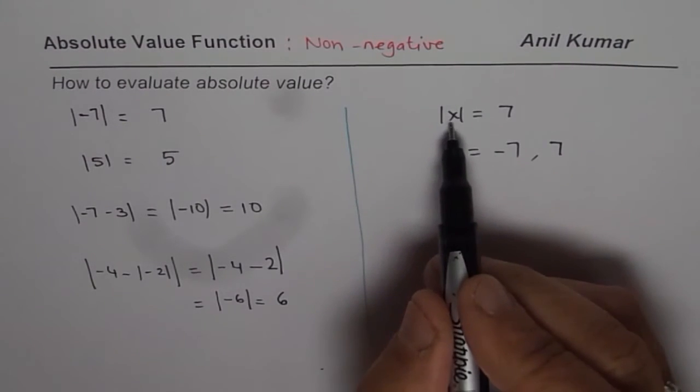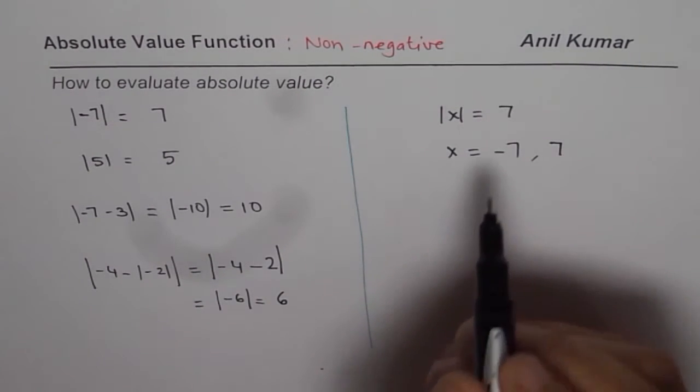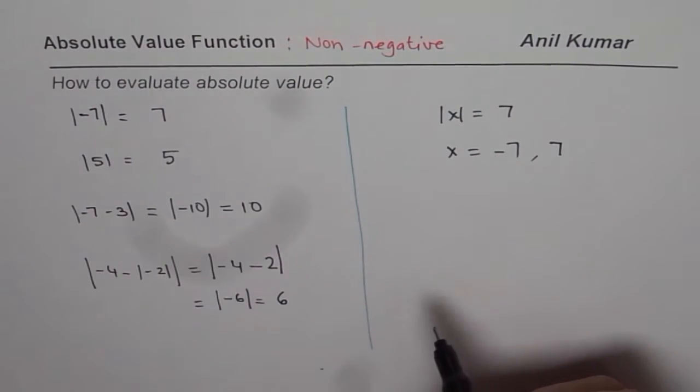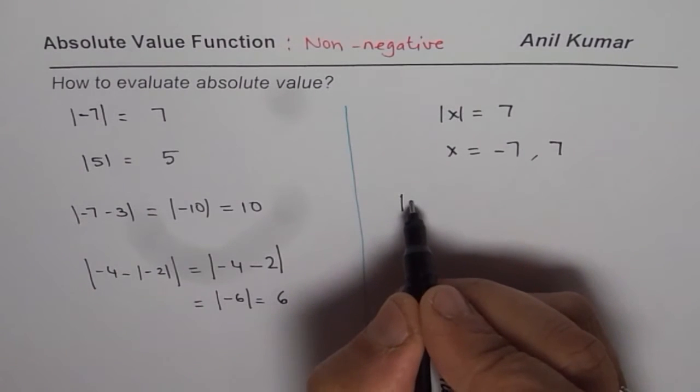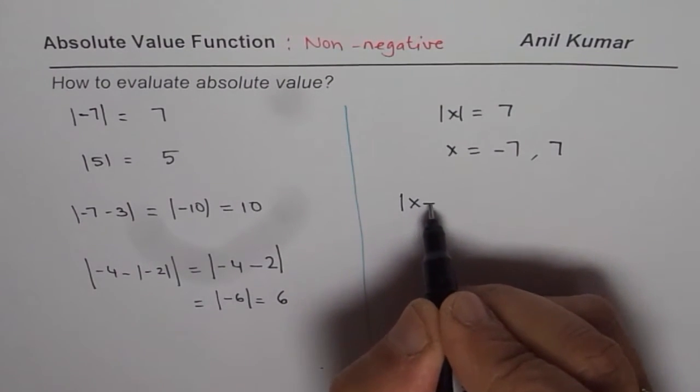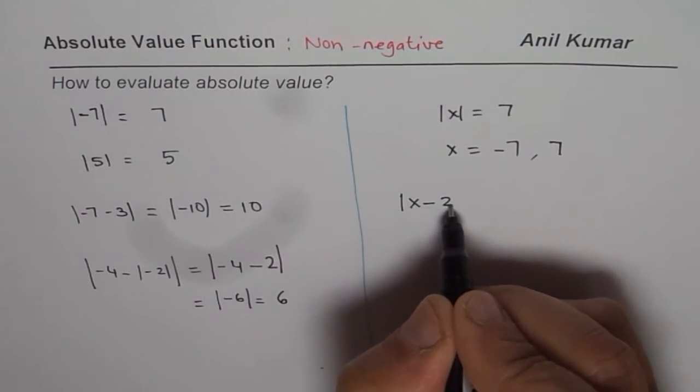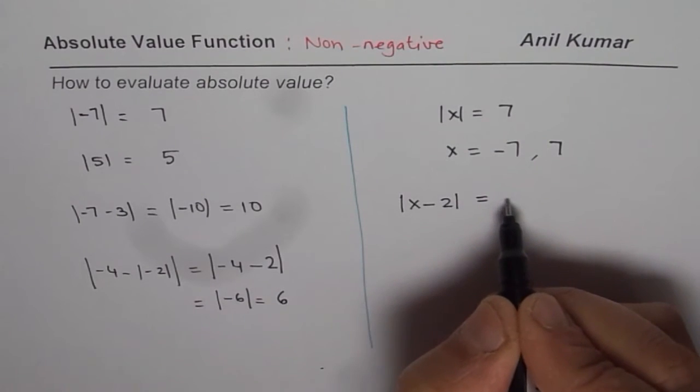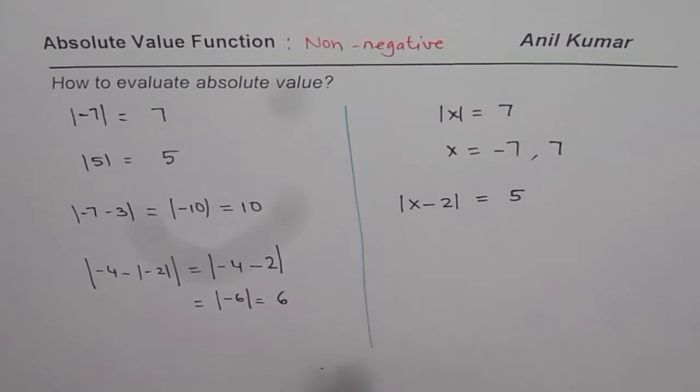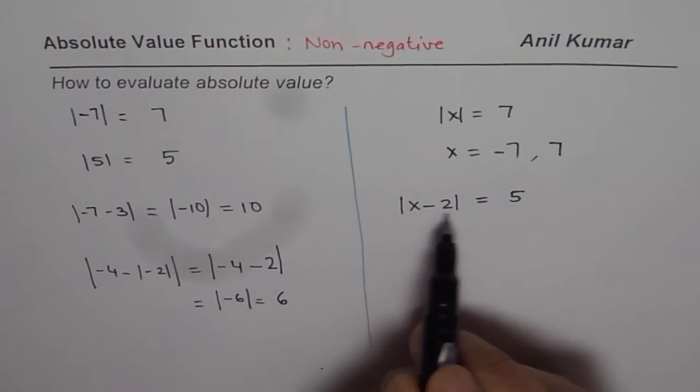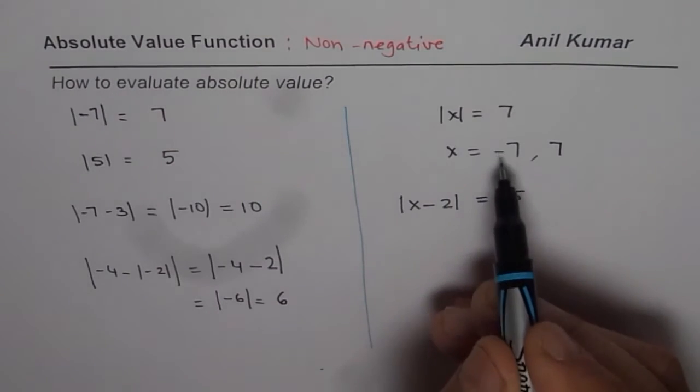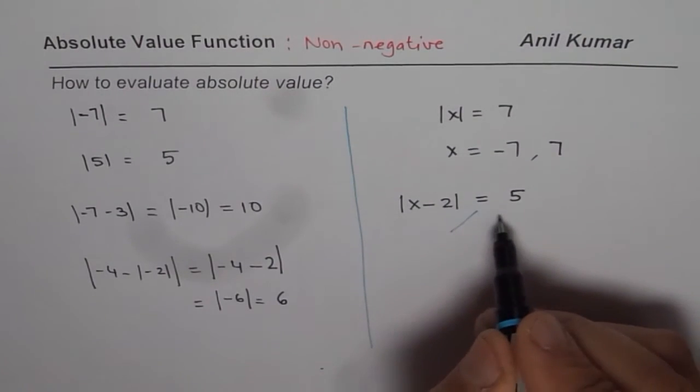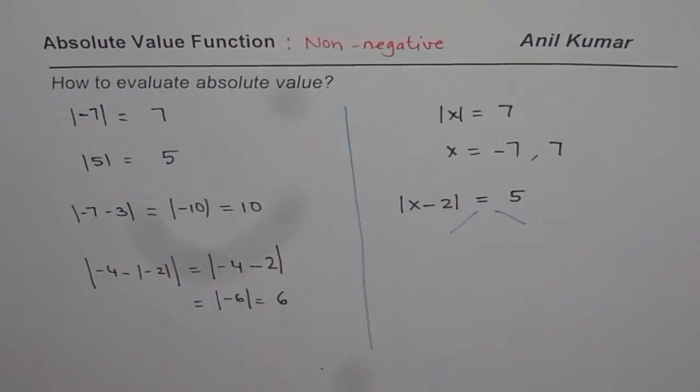Absolute value is non-negative. When you do absolute of a negative number you get positive. Now here is a thinking question for you: how will you find the answer for absolute value of x minus 2 equals 5? If I give you something like this to solve, how are you going to solve it? As we have seen in the above example, we could actually treat it as two different questions.